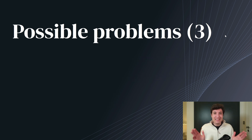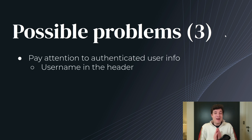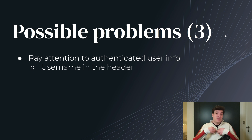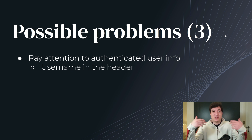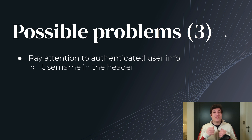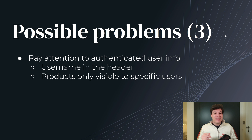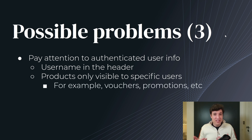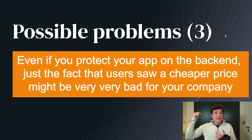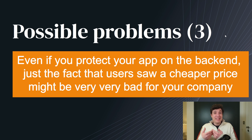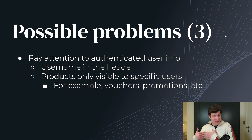Let me give you a third list of problems, all based on the authenticated user. Let's say you have your username in some kind of header. All the other users that receive that cached page will have that same user — let's say the first user was me, Bruno — so all the next users going to that page in the next 20 seconds will receive a page saying Bruno. It can get even worse: if you have a list of products with vouchers or promotions already applied to the price, and because I'm Bruno I have some promotions, the next user will see my promotions. This is no longer only a GDPR problem — it's also a problem in terms of financial loss for your business.